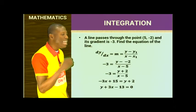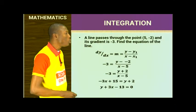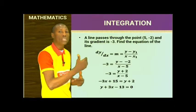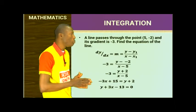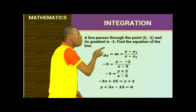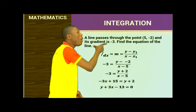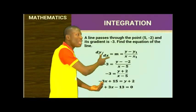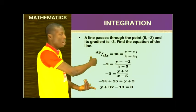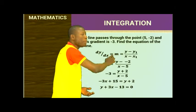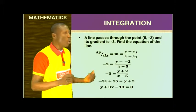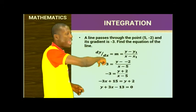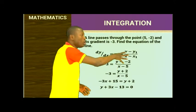Now another question: a curve passes through the point (5, -2) and its gradient equals -3. Find the equation of the line. This is an application question using what I taught earlier. The gradient is -3, meaning dy/dx equals -3, represented as M. When you have two coordinates and need to find the equation of a line, the formula is: (y - y1) / (x - x1) = M.